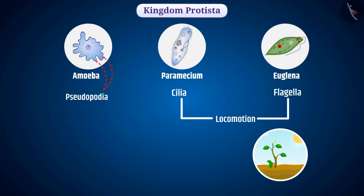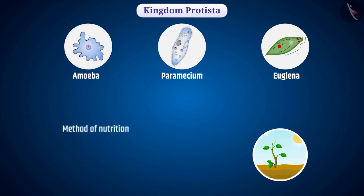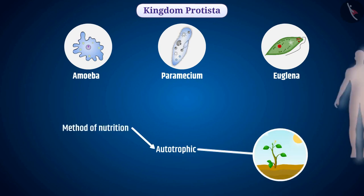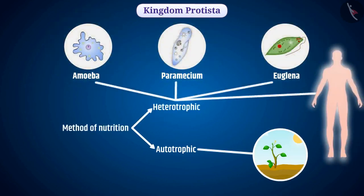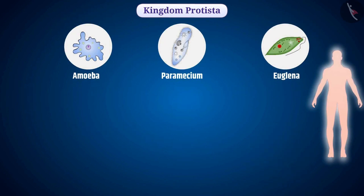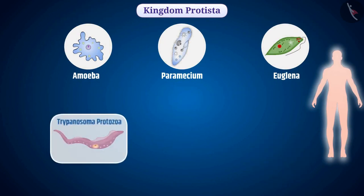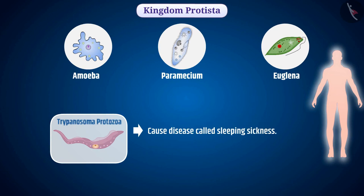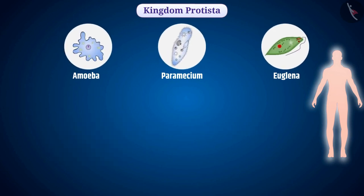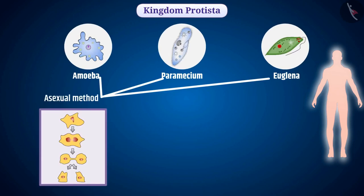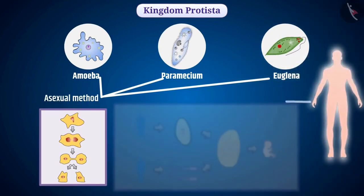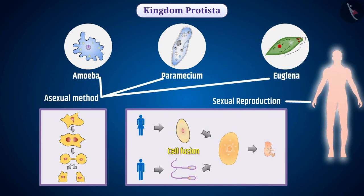With the help of pseudopodia, amoeba performs locomotion and takes food. The method of nutrition of some organisms is autotrophic and of some is heterotrophic. Some organisms such as Trypanosoma protozoa are parasites which cause diseases like sleeping sickness. Some organisms reproduce by asexual methods and some through sexual reproduction, with cell fusion and formation of a zygote adopted in sexual reproduction.